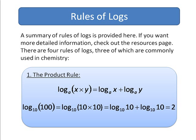As an example, log of 100 is equal to log of 10 times 10, because 10 times 10 is 100. This is equal to log 10 plus log 10, and this is equal to 2, because log to the base 10 of 10 is 1.